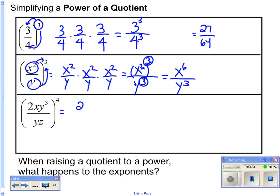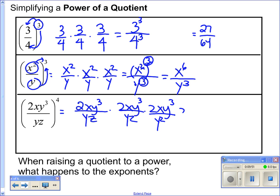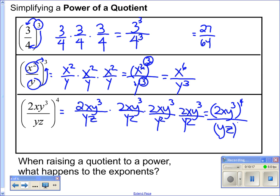Here we go: 2xy cubed over yz, to the fourth power. That's 2xy cubed over yz, times itself four times. That's really the same thing as 2xy cubed to the fourth power, all over yz to the fourth power — just my numerator to the fourth power over my denominator to the fourth power.